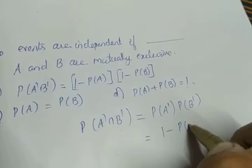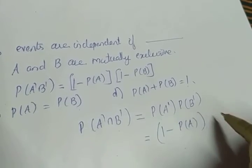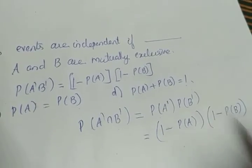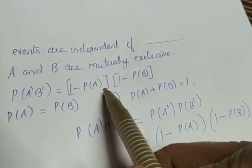And P(A') can be written as 1 minus P(A) because the sum of the probabilities is 1. Same way P(B') can be written as 1 minus P(B). And we are getting the RHS of the second one.